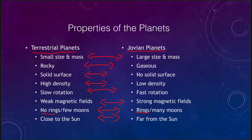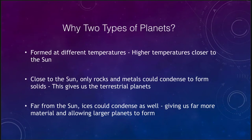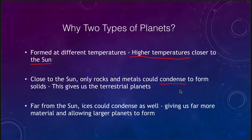Now what might cause us to have these two different types of planets? We believe it has to do with how and where they formed in the solar system. When you're close to the sun you would have a higher temperature — much hotter. So as the solar system was forming, you had higher temperatures close to the sun, colder temperatures further away, and that meant that different types of materials could condense. Close to the sun, the only things that could actually form solids were rocks and metals.